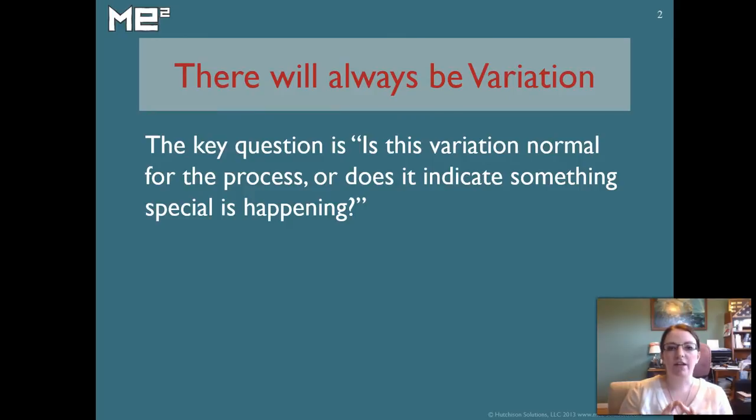There will always be variation. Variation is any differentiation or change or deviation from a norm. The key question shouldn't be, why is this variation happening, oh no, we have variation, what should we do? It should be, is this variation normal for the process, or is something weird happening, and we really need to do something because this is a problem.